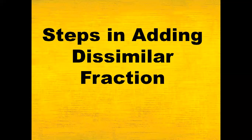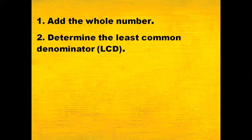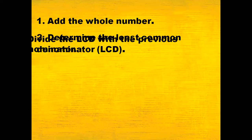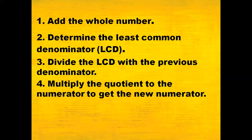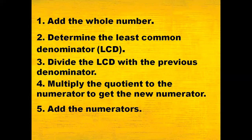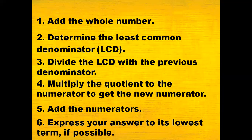What are the steps in adding dissimilar fractions? First, add the whole numbers. Next, determine the least common denominator or LCD. Divide the LCD by the previous denominator. Multiply the quotient by the numerator to get the new numerator. Step 5: add the numerators. And finally, express your answer in its lowest term if possible.